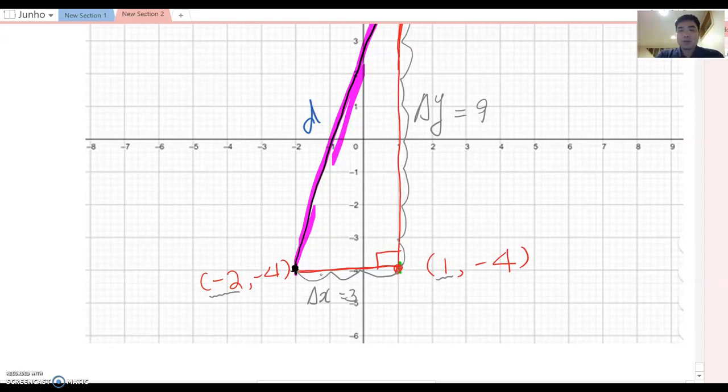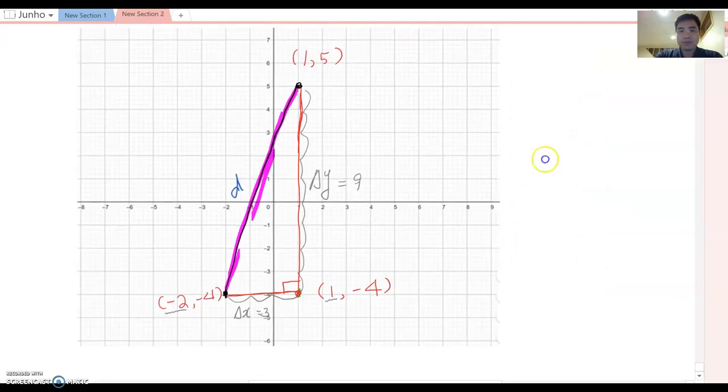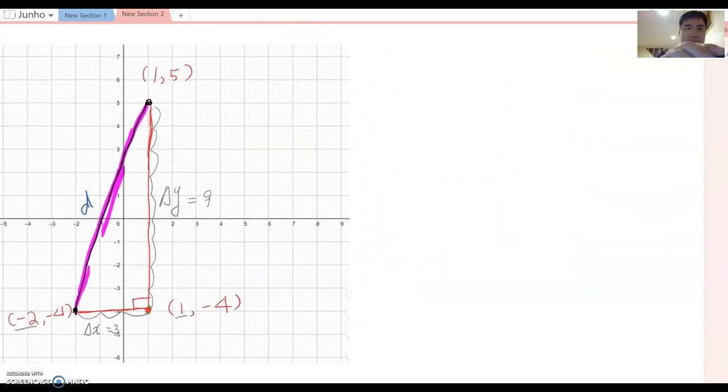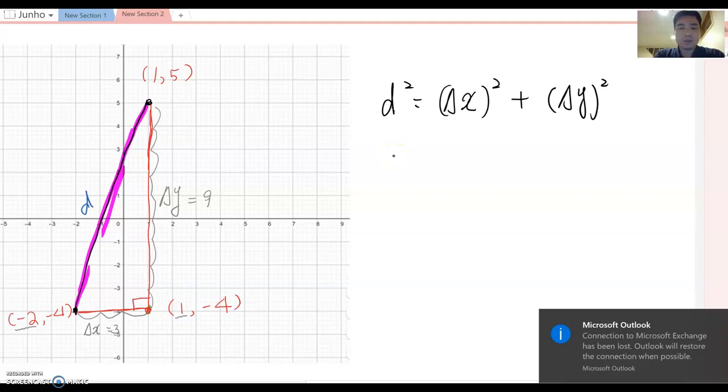Therefore, we can find out distance d using the Pythagorean theorem from that one. So using d² equals—basically delta x squared plus delta y squared. So we know delta x = 3 and delta y = 9. Therefore, d² = 3² + 9².